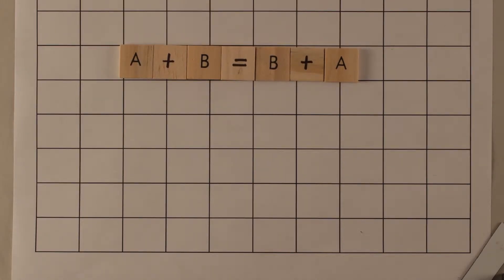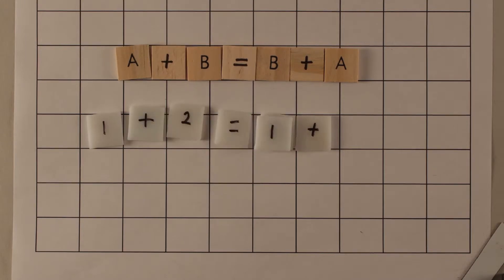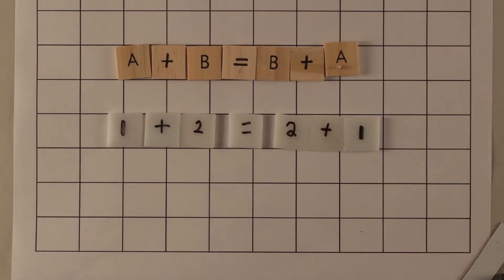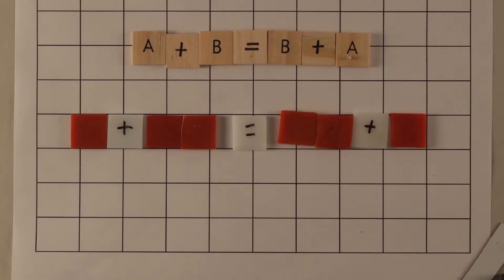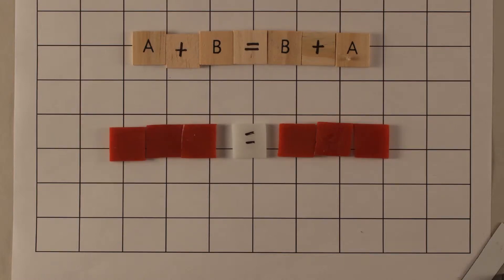A plus B equals B plus A, or an example would be 1 plus 2 equals 2 plus 1, and now we'll do it in tiles. 1 plus 2 tiles equals 2 tiles plus 1 tile, or 3 tiles equals 3 tiles.